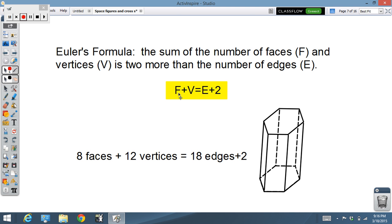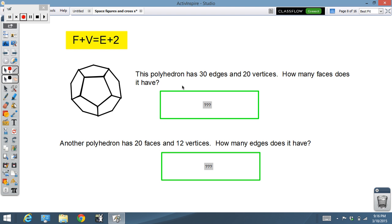That comes in real handy because a guy named Euler found out that works for any polyhedron. And he put it into a formula. Number of faces plus the number of vertices equals edges plus two. This figure here happens to have eight faces, twelve vertices. It has eighteen edges. Twenty equals twenty.